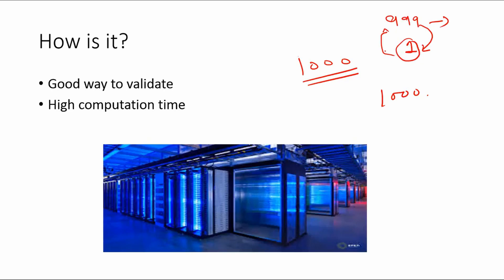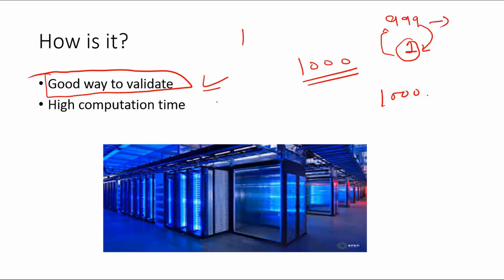It's going to take a lot of time if you have too many observations. In a real-time scenario, you might have 1,000,000 observations to cross-validate, which takes a lot of time. It's a good way to validate because you take every single data point out from your training data and test how the model predicts each observation. But the computation time would be huge. The good thing is that nowadays, with high computation power and cloud service resources, this technique is becoming more popular as computational power has gone up drastically over the last few decades.